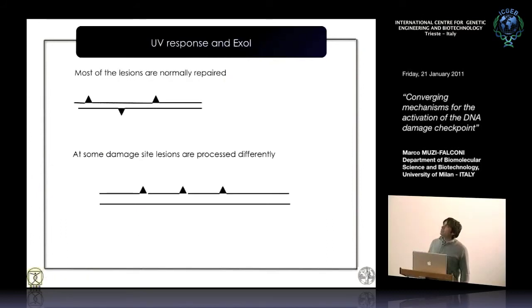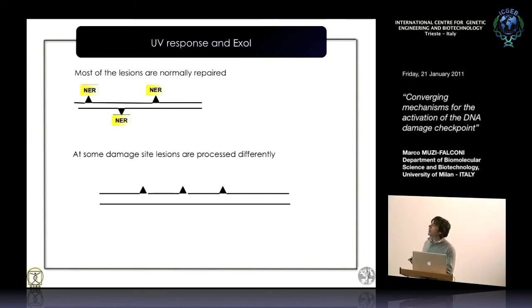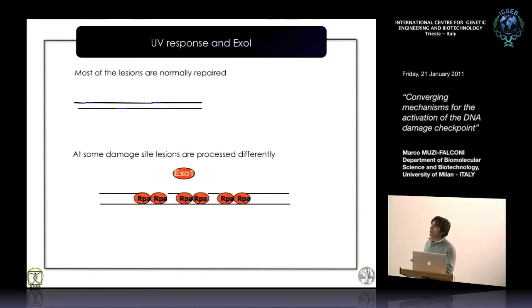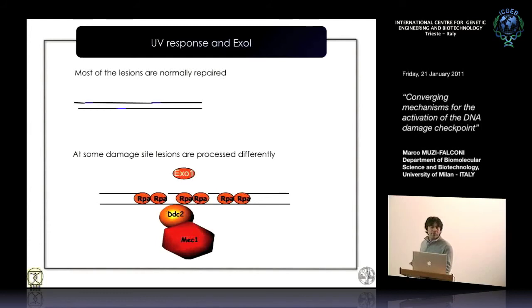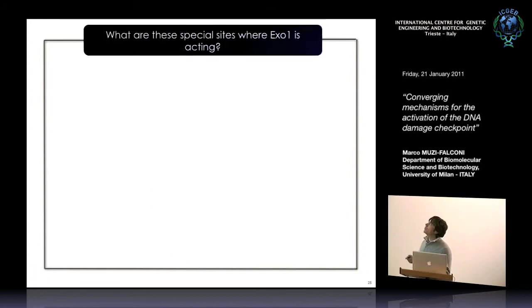Most UV lesions are repaired normally, and some lesions are processed differently. The question we asked next is: what is so special about these sites that are processed differently? Why are some sites repaired normally and some processed differently? We thought about three different possibilities.